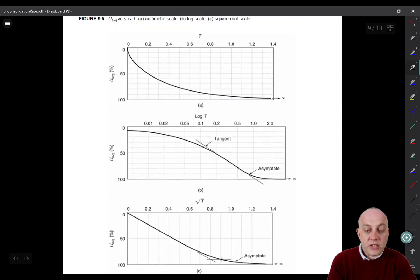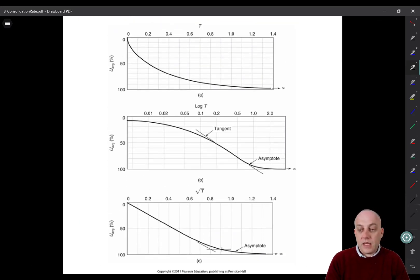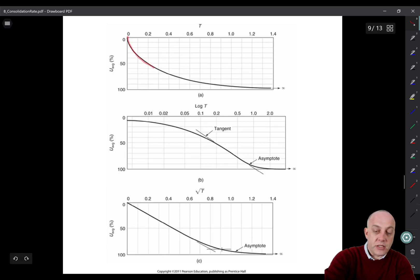As you recall, the relationship between the average degree of consolidation and time factor T has been derived from Terzaghi's one-dimensional consolidation theory. We know the dimensionless relationship between basically dimensionless settlement and dimensionless time. So what we're going to do is try and curve fit these theories for settlement versus time to our laboratory test data. Once we've done that, we can figure out which C sub V value gives us that best curve fit.